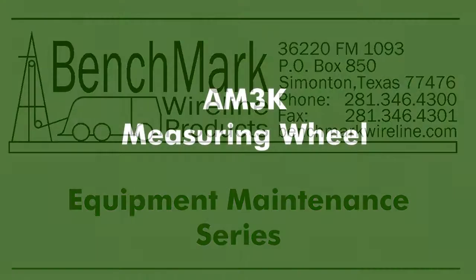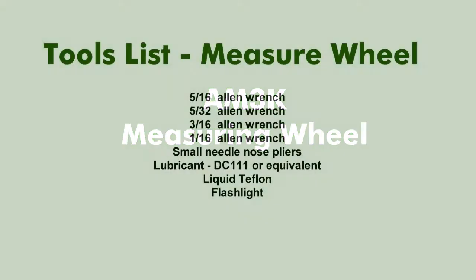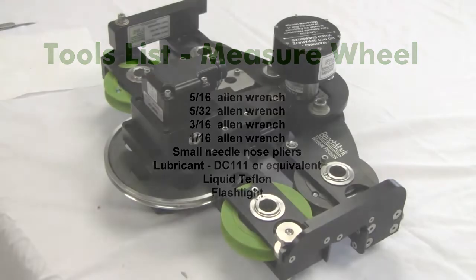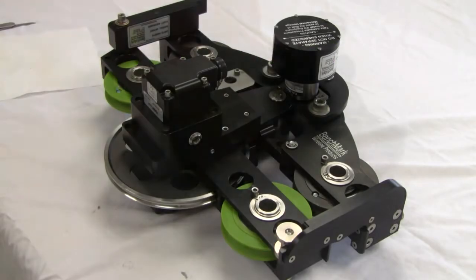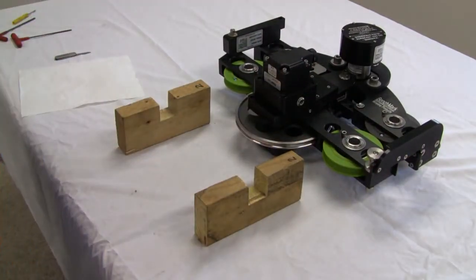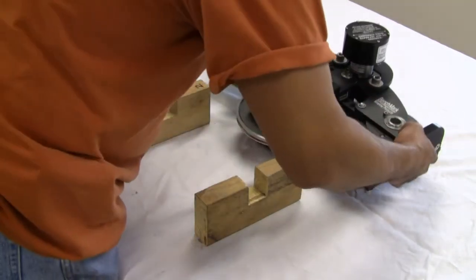This video will demonstrate how to replace the measuring wheel on the AM3K measuring head from Benchmark Wireline. For ease of work, place the measuring head on its side. Simple 2x4 wooden blocks will help with equipment maintenance.